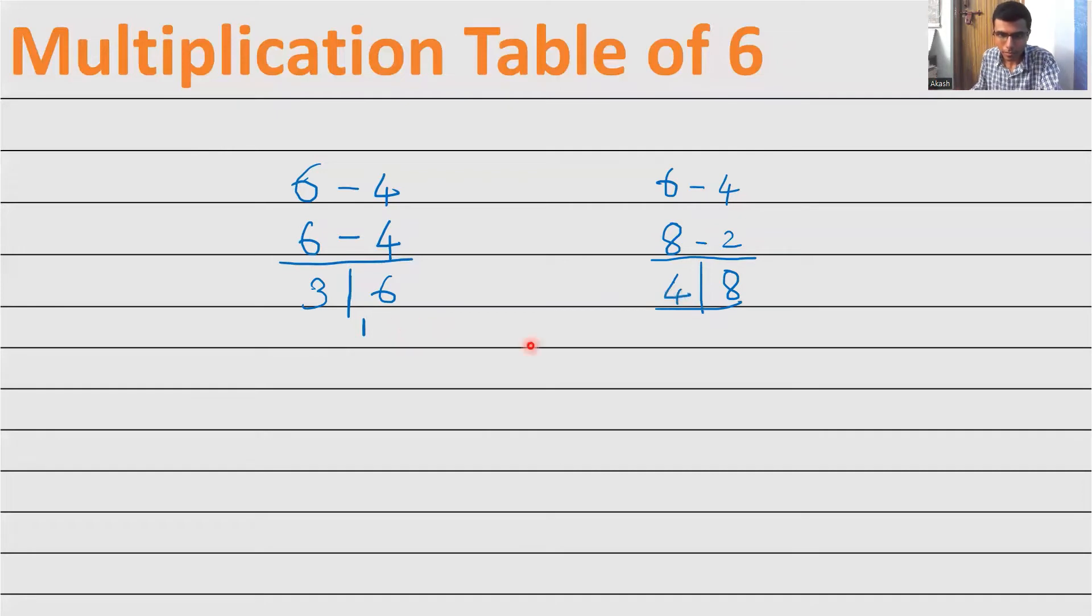Now let's see one more thing. Let's see 6 nines are. How much is 6 less than 10? By 4. How much is 9 less than 10? By 1. Again, answer will come in two parts. So don't forget to put this slash. What is 4 into 1? 4. What is 6 minus 1? 5. That's it. 6 nines are 54.